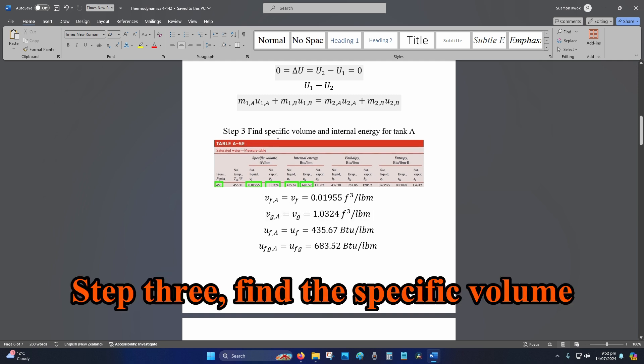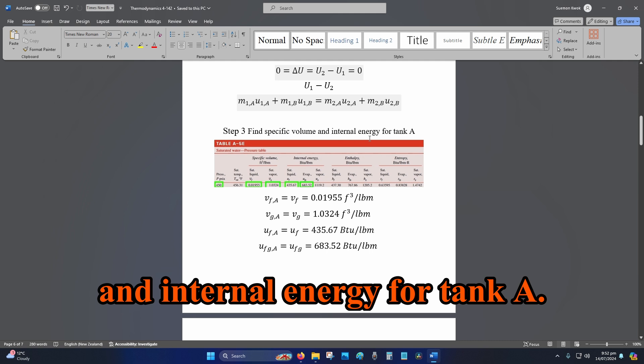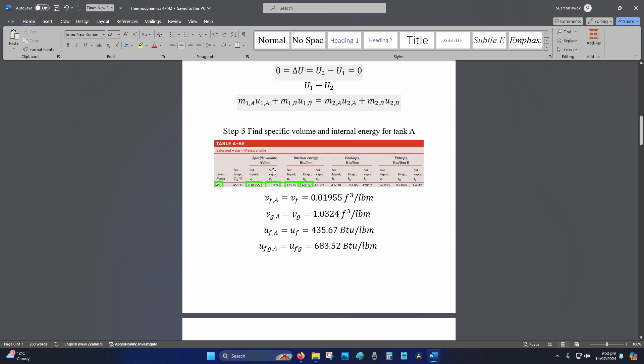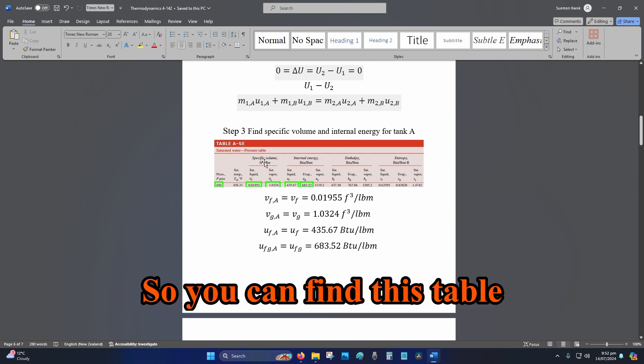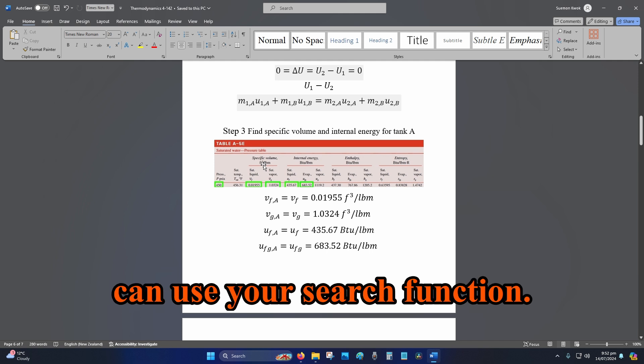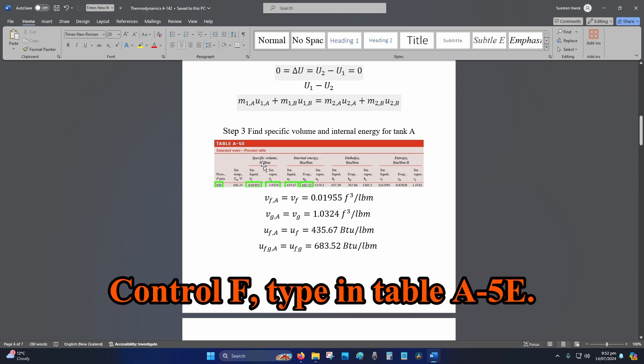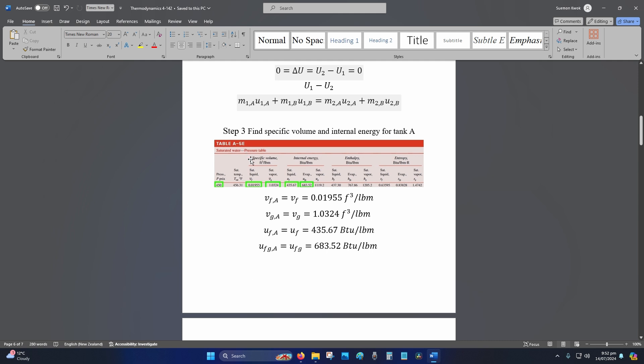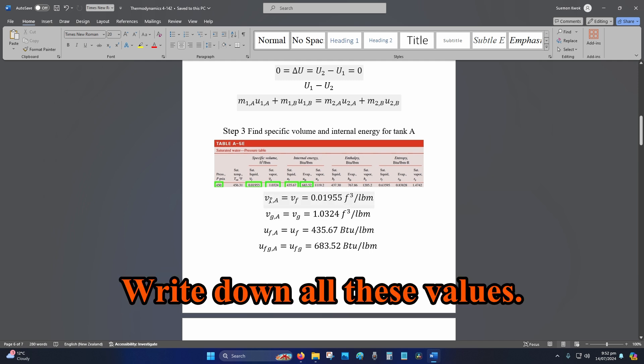Step 3, find the specific volume and internal energy for tank A. So, you can find this table at the back of your textbook. If you bought the PDF, you can use your search function. Control F, type in table A-5E. Go to 450 PSIA. Write down all these values.